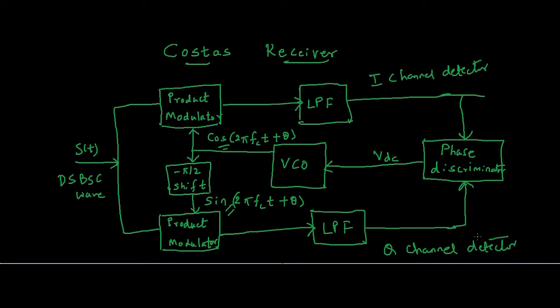This feedback system has the objective to maintain the local oscillator output in synchronous with the carrier used at the transmitter. In coherent detection, there will be a product modulator followed by a low-pass filter and a local oscillator generated at the receiver side. But in Costa's receiver, the local oscillator produces signals which are in quadrature with each other, and we will see what is the benefit of doing it this way.